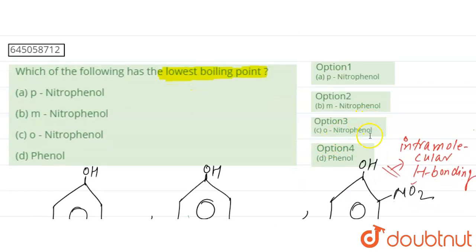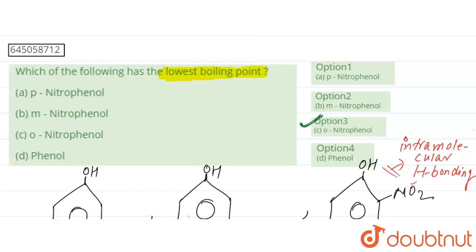Therefore, ortho-nitrophenol will have the lowest boiling point. Option C — option 3 — is the correct answer for this question, because it has intramolecular hydrogen bonding. I hope you have understood the question.